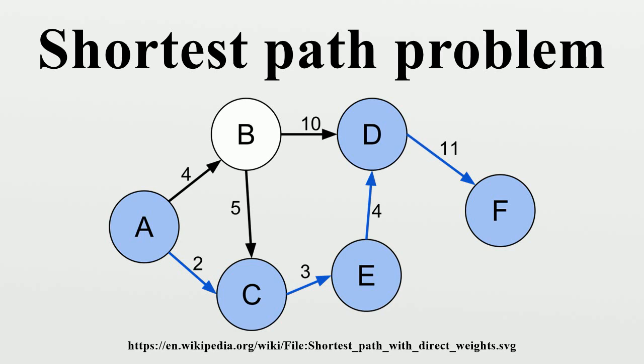All pairs shortest paths: The all pairs shortest path problem finds the shortest paths between every pair of vertices in the graph. The all pairs shortest paths problem for unweighted directed graphs was introduced by Schimble, who observed that it could be solved by a linear number of matrix multiplications.